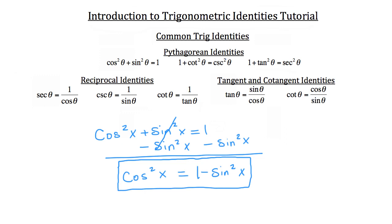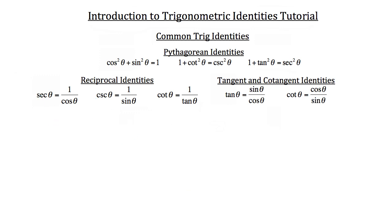After Pythagorean identities, we can look at the reciprocal identities. These are pretty straightforward. For example, the secant of theta is equal to 1 over cosine theta. The cosecant of theta is equal to 1 over sine theta. And the cotangent of theta is equal to 1 over tangent theta. Remember, you can replace the variable theta with another variable such as x. Whatever variable you choose to use, you want to use that variable throughout the problem — mixing x and theta would suggest they have different values, and the identity wouldn't be true.